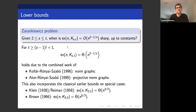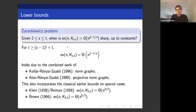The Zarankiewicz problem was refined into the question of for what parameters is this upper bound sharp or not. There has been a long series of beautiful results. The successful ones which capture when the upper bound is achieved can be abbreviated in two displayed equations. For t greater than (s-1)! + 1, the extremal function is indeed of the order n^{2 - 1/s}. This follows from the combined work of Kollár, Rónyai, and Szabó from 1996 and Alon, Rónyai, and Szabó from 1999.